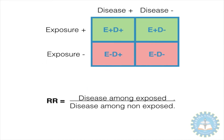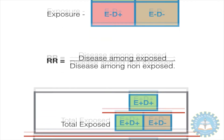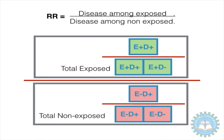The first parameter used to determine causation is called the relative risk — to see the percentage of disease among exposed versus the percentage of disease among non-exposed. In other words, it is the number of people with disease and exposure divided by the total number of people exposed, divided by the number of diseased people without exposure by the total number of people who have not been exposed in the study.